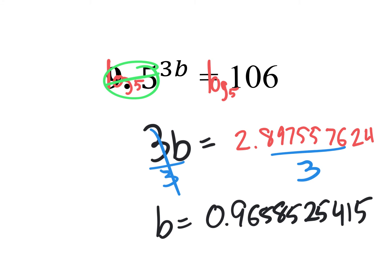The instructions will tell you to round to the nearest ten-thousandths position: tenths, hundredths, thousandths, ten-thousandths. You look at the next digit over — in this case the 5 does change the 8 to a 9. So your final answer will be b equals 0.9659.